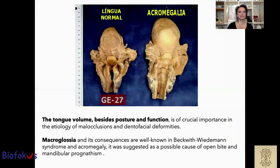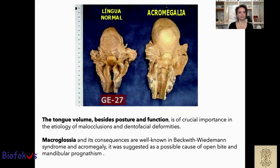The tongue volume, besides posture and function, is of crucial importance in the etiology of malocclusion and dental facial deformities. Macroglossia and its consequences are well known in Beckwith-Wiedemann syndrome and acromegaly; it was suggested as a possible cause of open bite and mandibular prognathism.